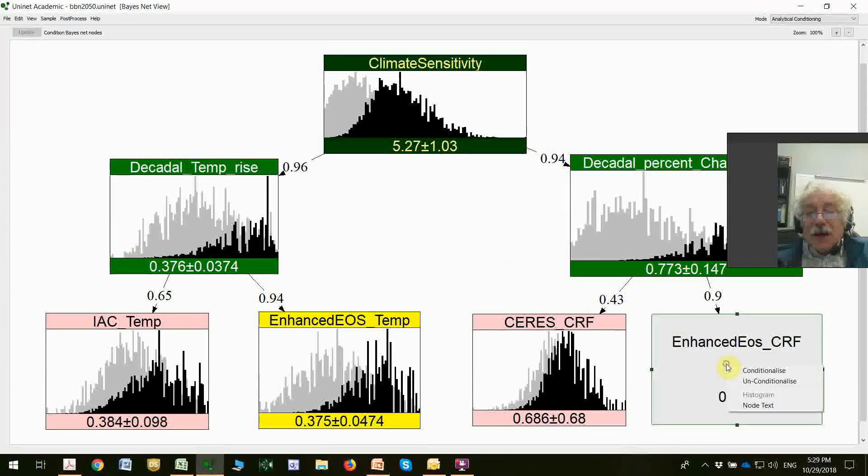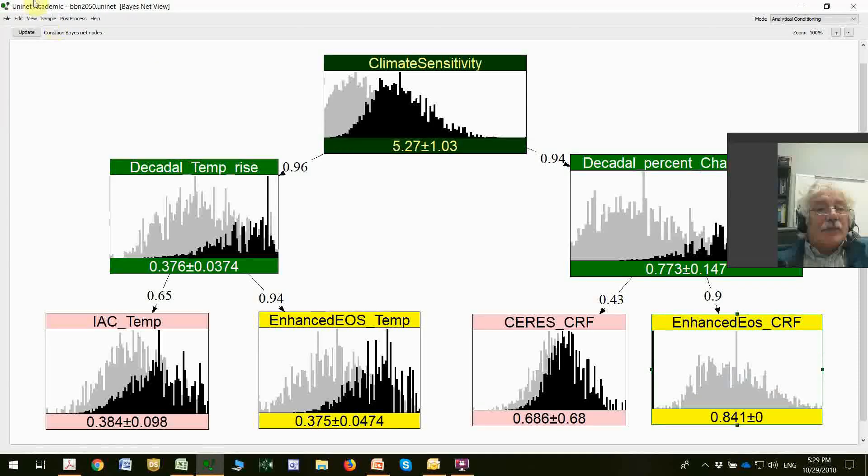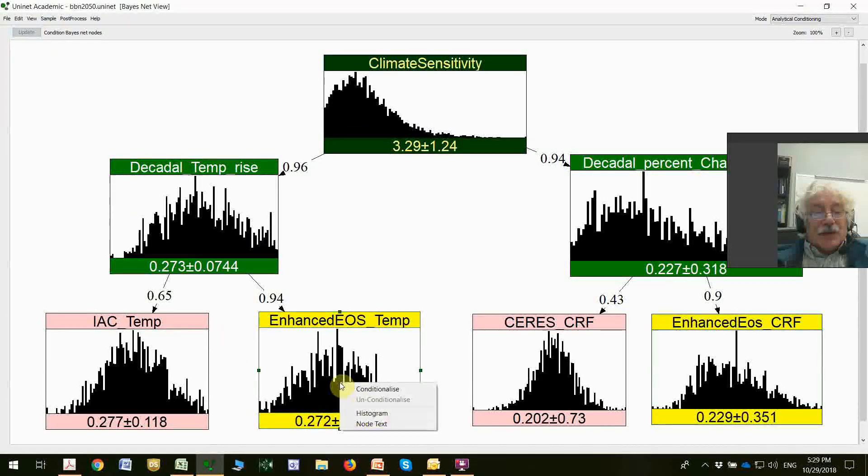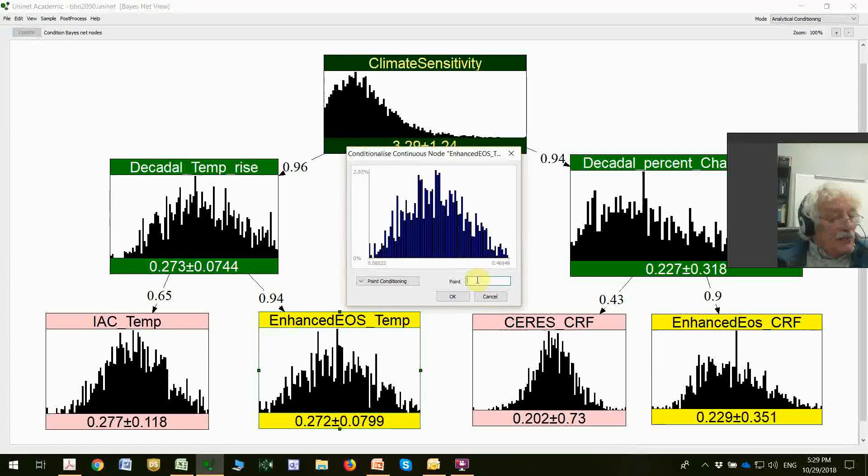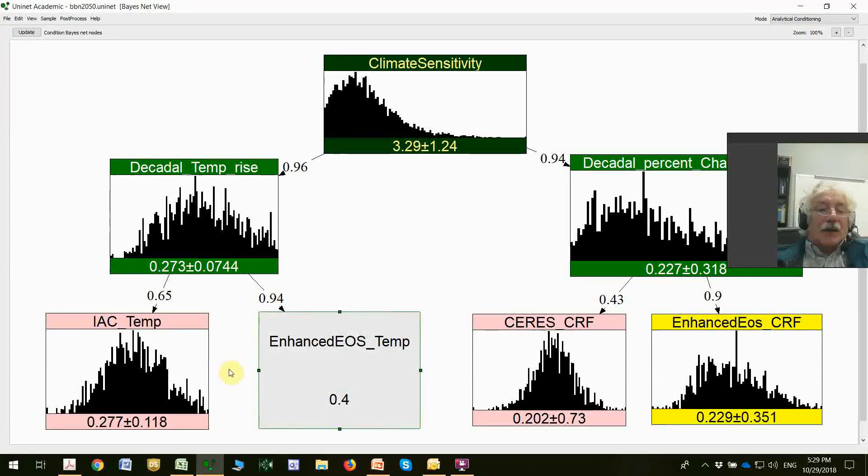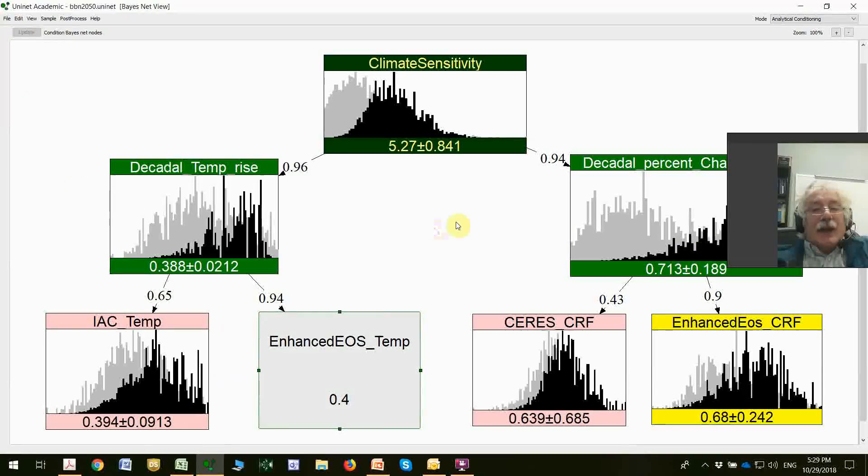Let's now undo this one. Let's measure temperature, rate of temperature rise, with the enhanced system. Suppose we get the value 0.4. Our temperature team has come back with 0.4. They run it through the software. And they find their prediction is also 5.27.